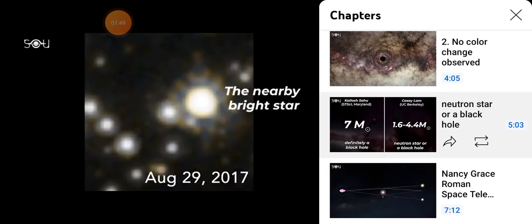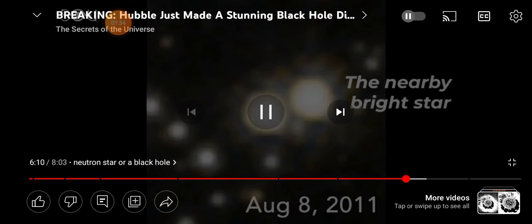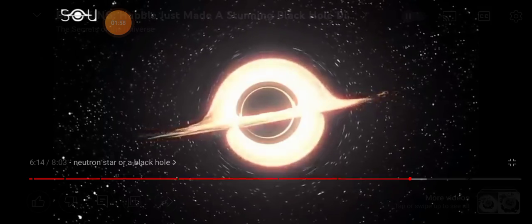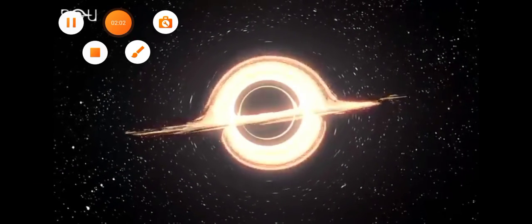They subtract the light from the nearby bright star to precisely measure the deflection of the faint source. The black hole is traveling across the galaxy at 100,000 miles per hour, or 160,000 kilometers per hour.